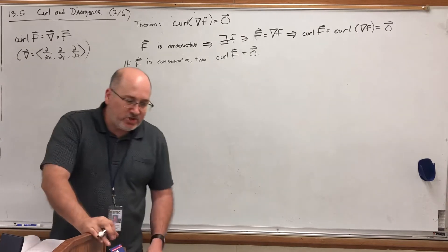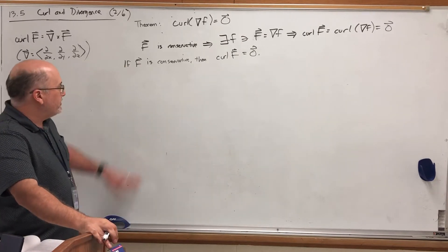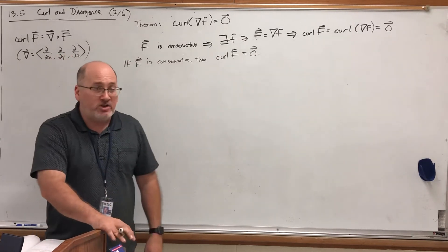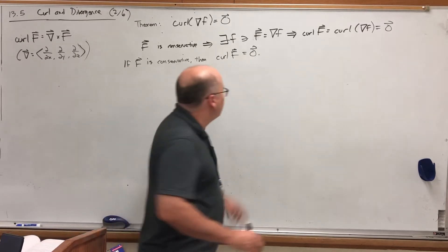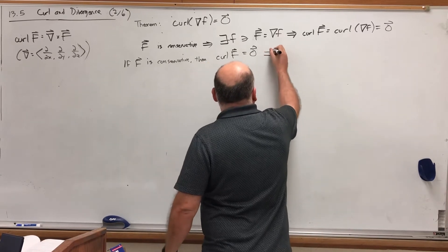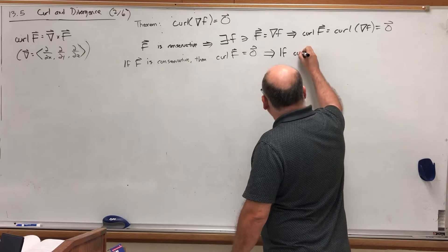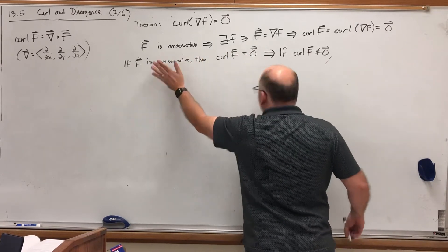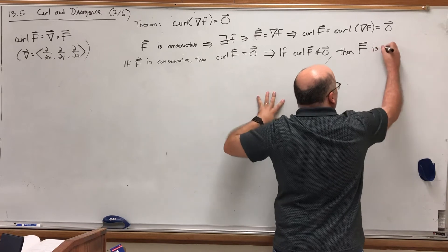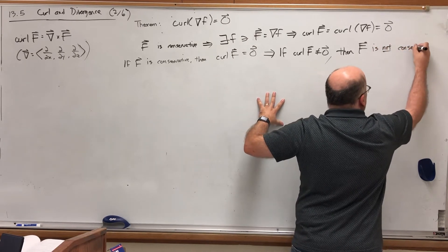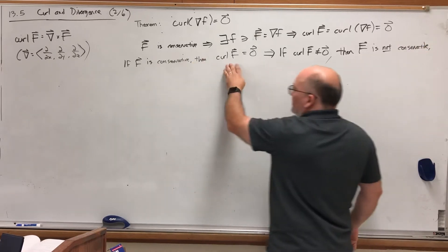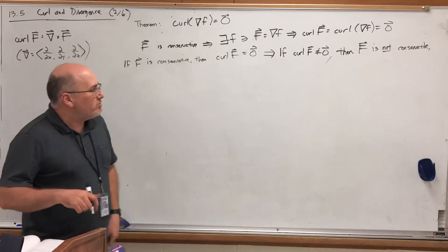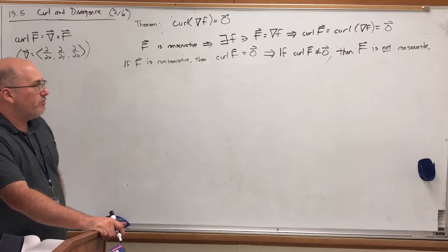Be careful — this doesn't give us a means to conclude a field is conservative, because it starts with conservative and doesn't end with conservative. However, you can always take the contrapositive of an implication, turning it around in reverse. So this statement implies: if the curl is not zero, then F is not conservative. Because if it were conservative, we could conclude the curl is zero, but since the curl is not zero, we can conclude it's not conservative. We can use the curl to answer the question: is the field not conservative? If your curl is not zero, then you are not conservative.